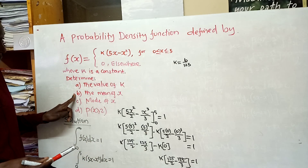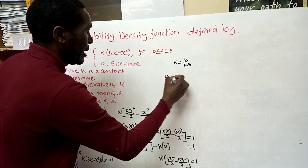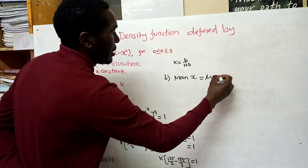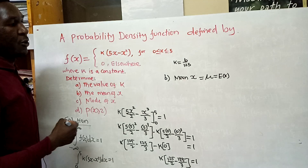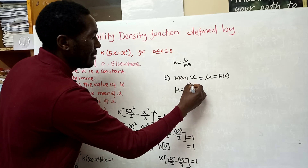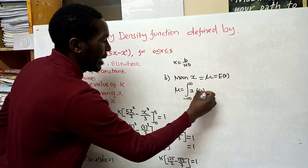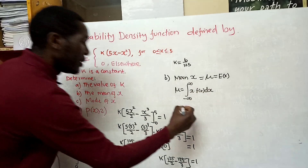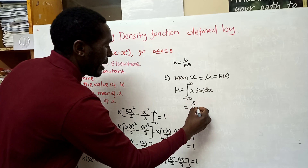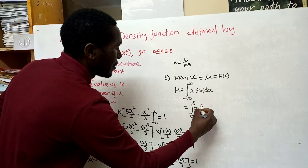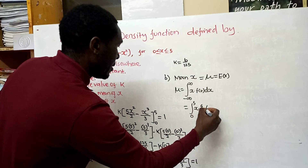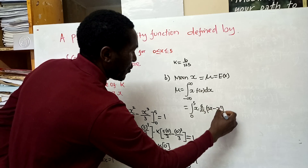For part b, we find the mean of x. The mean μ is equal to the expectation E[X], given by the integral from negative infinity to positive infinity of x times f(x) dx. With our limits, that becomes the integral from 0 to 5 of x times (6/125)(5x - x²) dx.